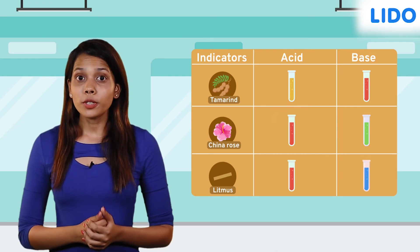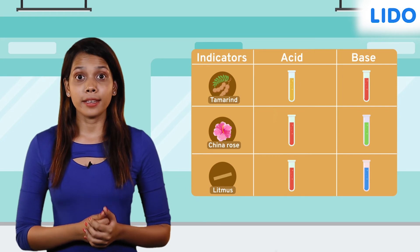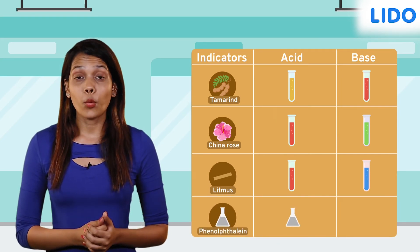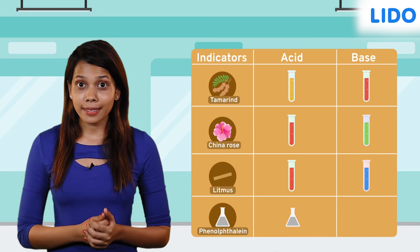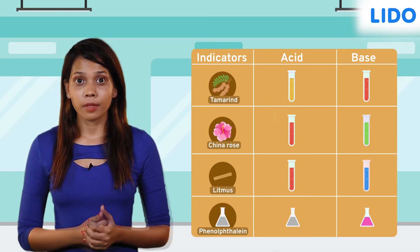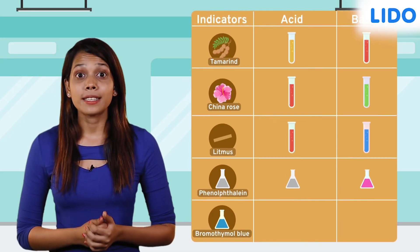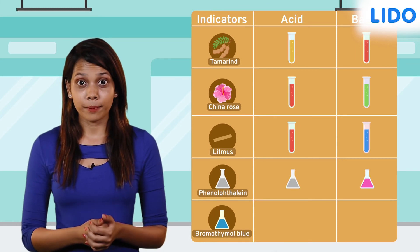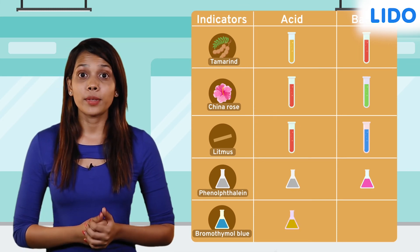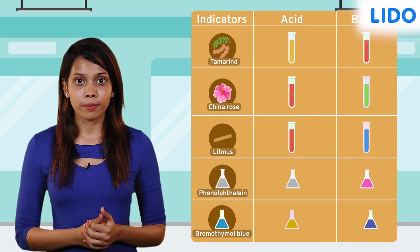Besides these, we also have artificial chemically prepared indicators. Phenolphthalein is colorless when mixed with acid and bright pink when mixed with a base. Bromothymol blue is another chemical indicator — it turns yellow when mixed with an acid and blue when mixed with a base.